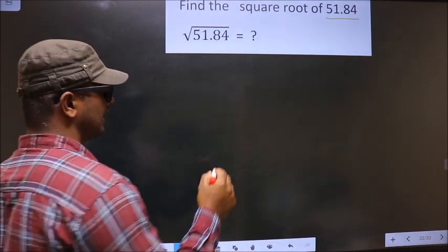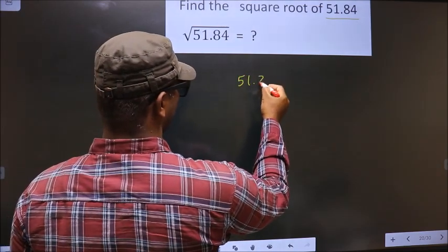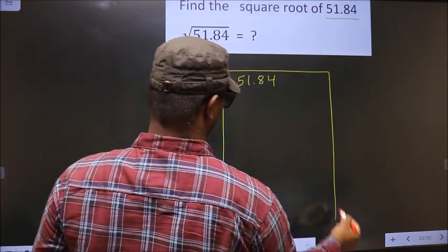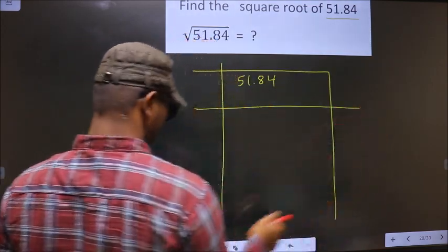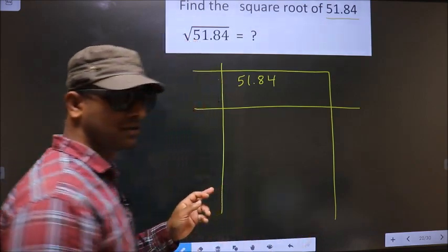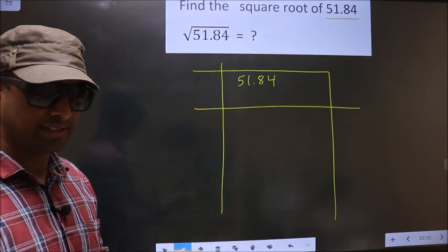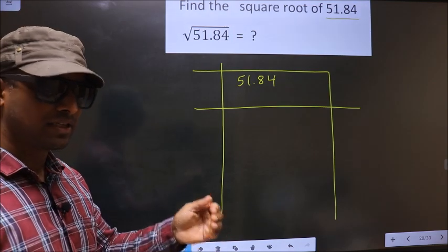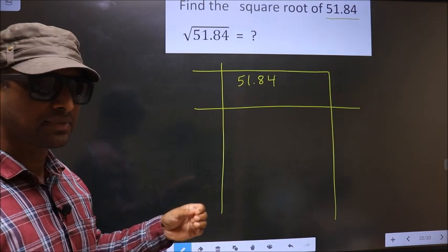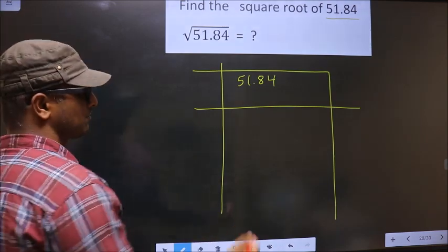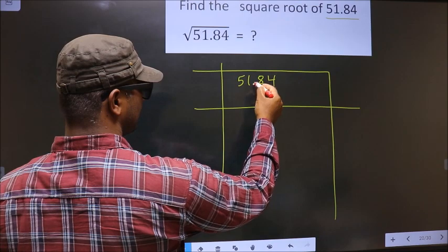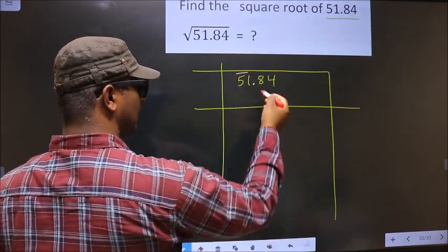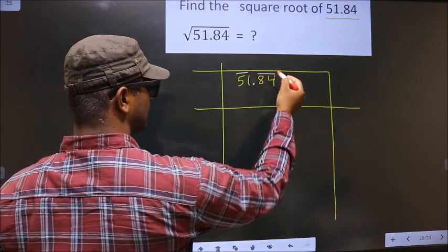See, that is 51.84. Now we should divide the given number into pairs. Numbers before the decimal and numbers after the decimal. So decimal is here. Before the decimal, we have two numbers, these two numbers, one pair. After the decimal, these two numbers, another pair.